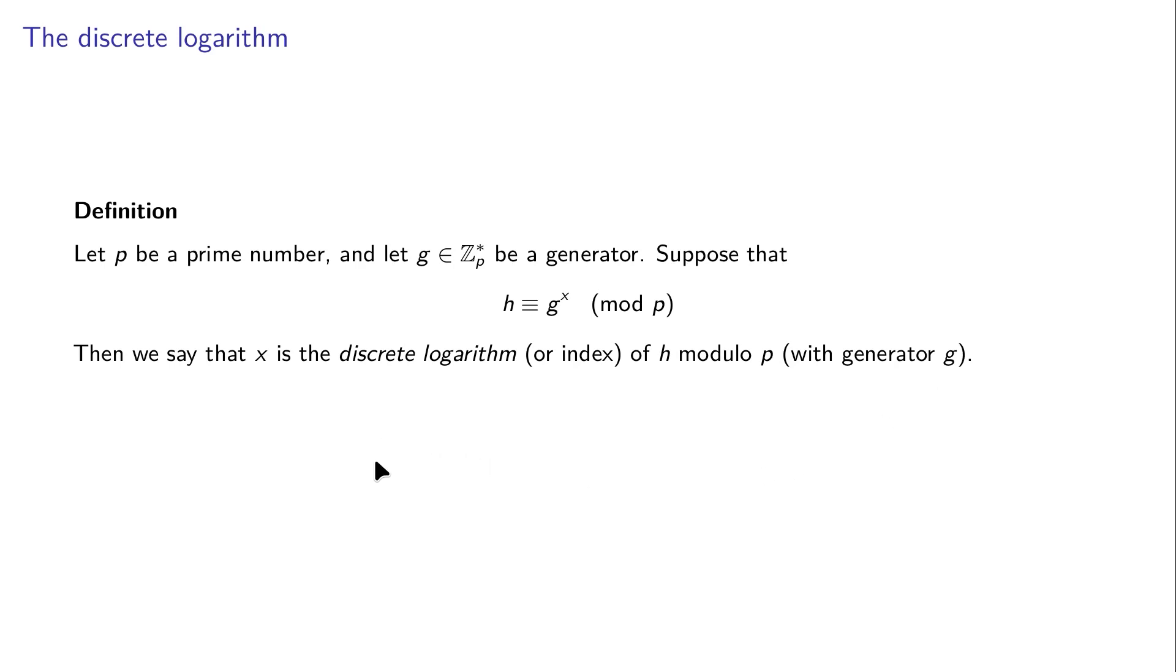So here we have an example. We choose p equal to 11, g equal to 2. In that case, we can say that 6 is the discrete logarithm of 9, because 2 to the power 6 results in 64, which is 55 plus 9, so it's congruent to 9 modulo 11. So 2 to the power 6 equals 9 modulo 11. That means that 6 is the discrete logarithm of 9.